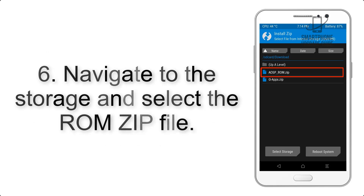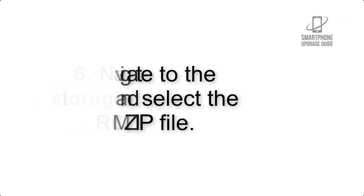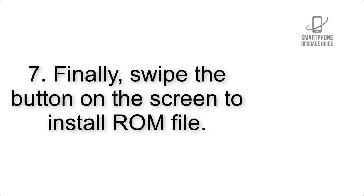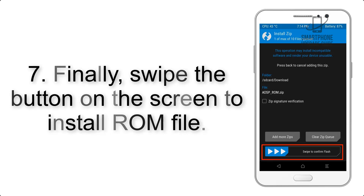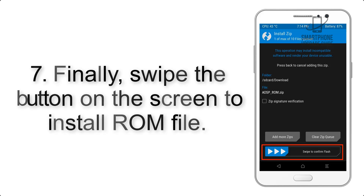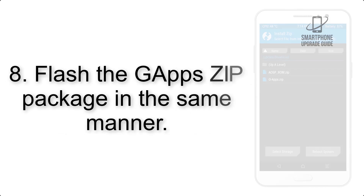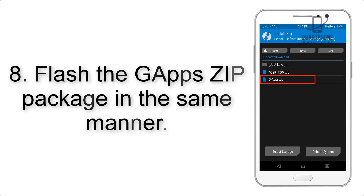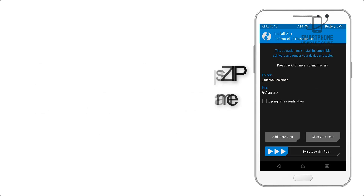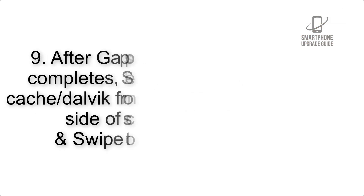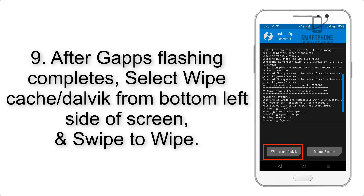Step 6: Navigate to the storage and select the ROM zip file. Step 7: Swipe the button on the screen to install the ROM file. Step 8: Flash the GApps zip package in the same manner.